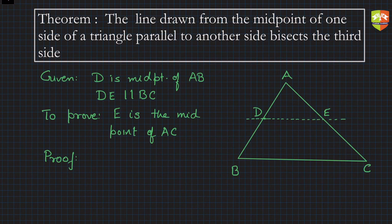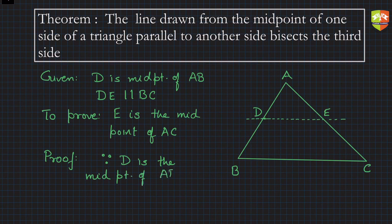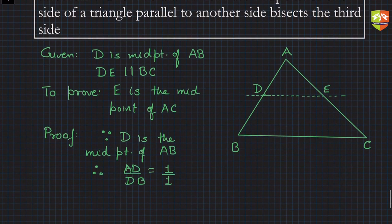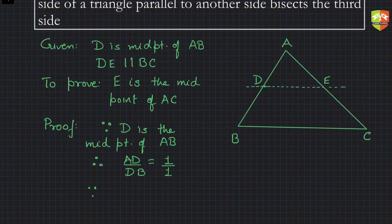To go about the proof — since parallel lines are given, the first thing that comes to mind is BPT, the Basic Proportionality Theorem. Since D is the midpoint of AB, therefore AD divided by DB equals 1. Let's call this equation (1).